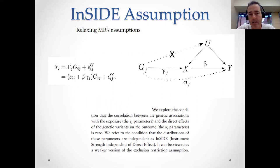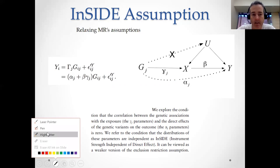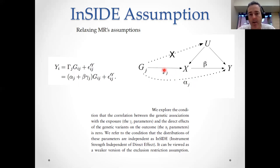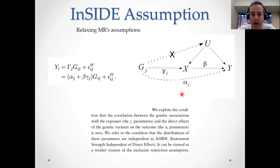MR Egger relies on something called the InSIDE assumption. InSIDE stands for Instrument Strength Independent of Direct Effect. What that means is that the instrument strength — gamma in this particular DAG — is independent of the direct effect alpha. So if you created a table across the different SNPs listing the instrument strength gamma and the direct effect alpha in two different columns, the correlation between those two terms across SNPs would be zero.